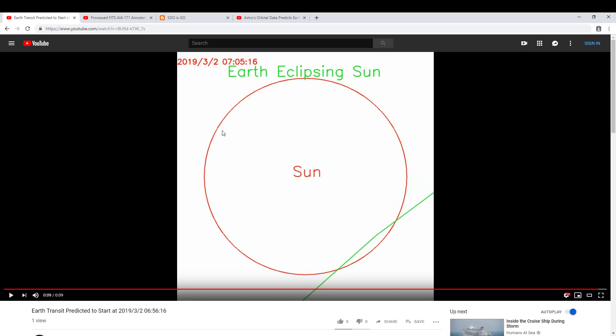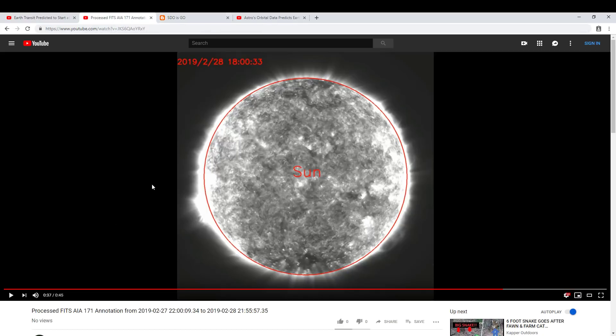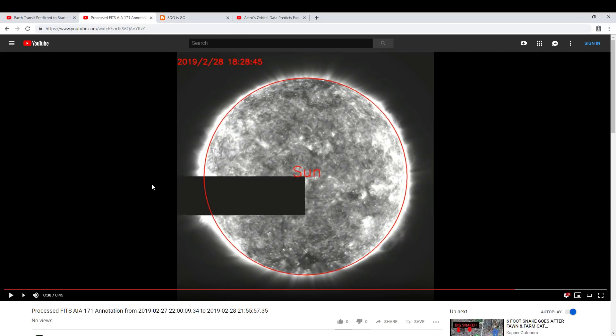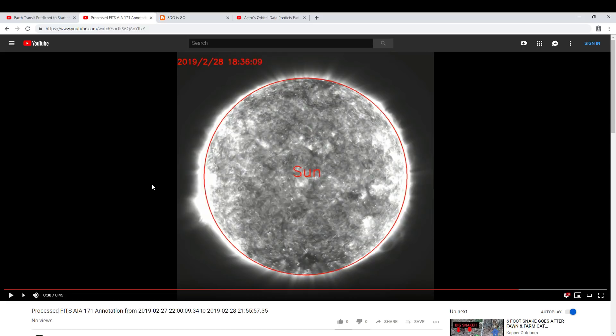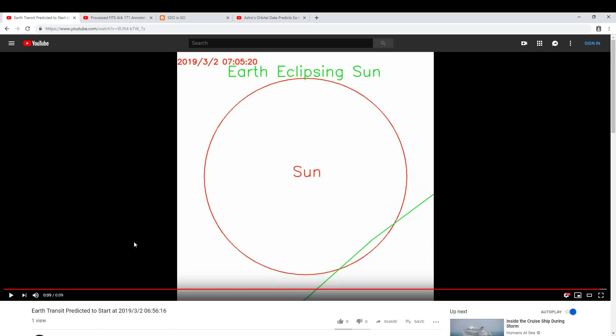At about 7:05 Universal Time is when the transit will end. If you look at the image cadence, how frequently we get an image from the SDO spacecraft in the real-time images that the bot runs on, it turns out that the image cadence is about every three minutes or so. At best, you're going to get two, maybe three images of this transit. It's going to be a very brief event.